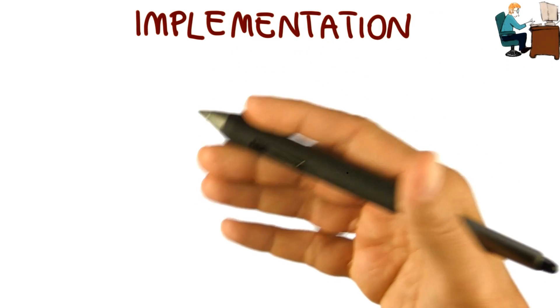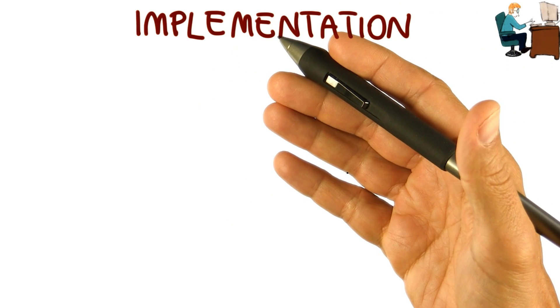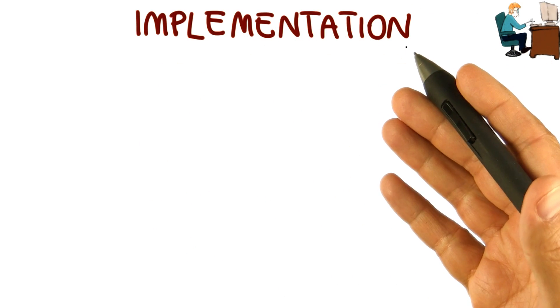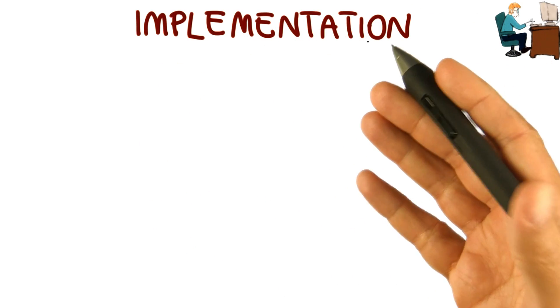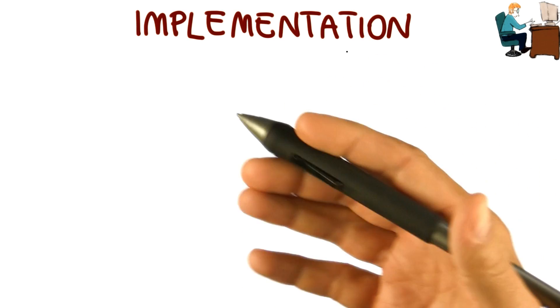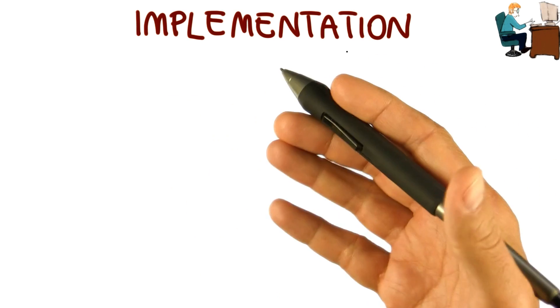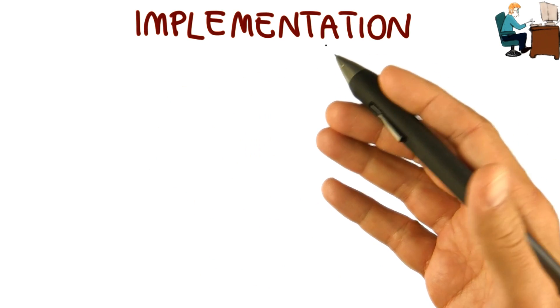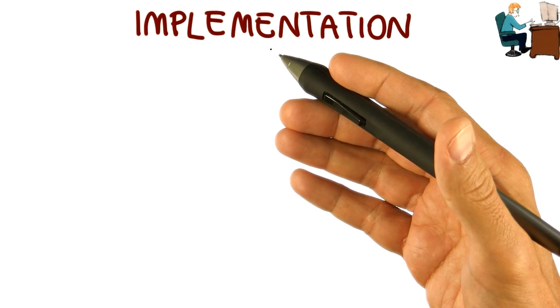After we have designed our system, we can implement it. In the implementation phase, what we do is basically taking care of realizing the design of the system that we just created and create an actual software system.